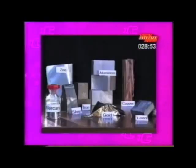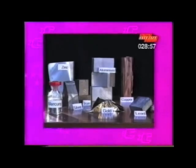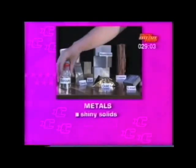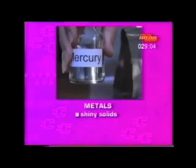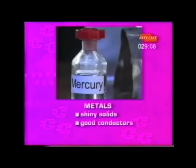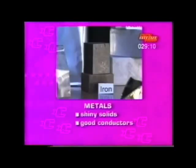All elements can be divided up into two groups: metals and non-metals, and each of these groups have similar properties. This group is metals. We can see they are all shiny solids at room temperature, except mercury, which is a liquid. They are good conductors of heat and electricity when solid or liquid, and some, like iron, are magnetic.